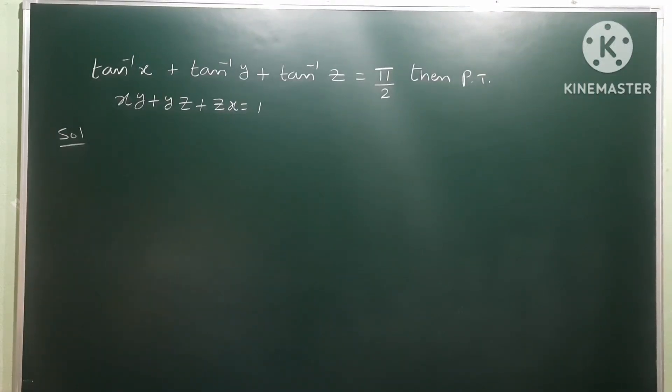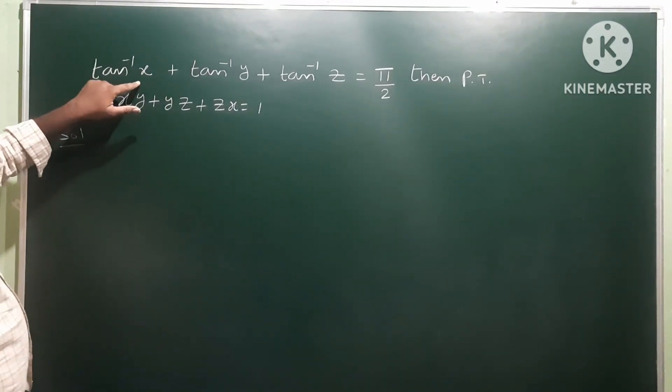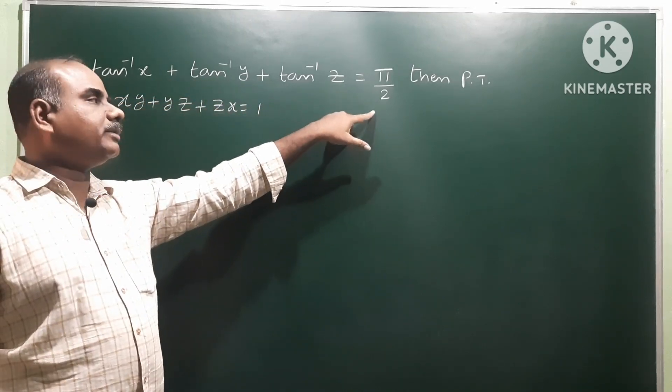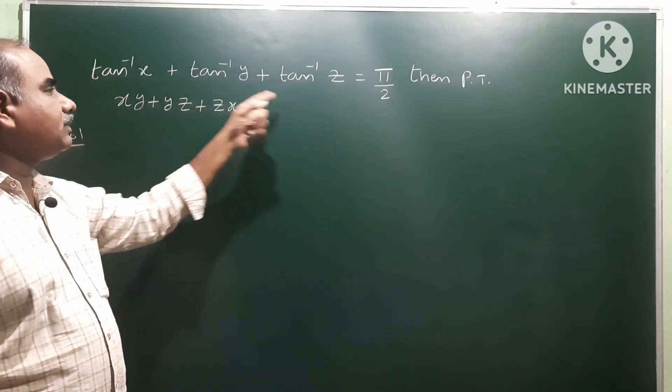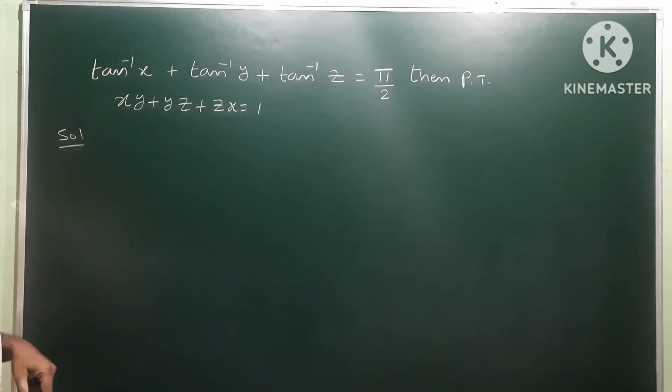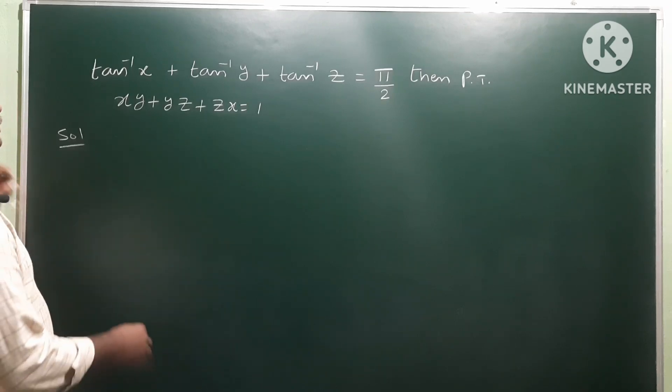Okay, next one. Given tan inverse x plus tan inverse y plus tan inverse z is equal to π by 2, sum of these three values as π by 2, and we have to prove that xy plus yz plus zx is equal to 1. That is our question.